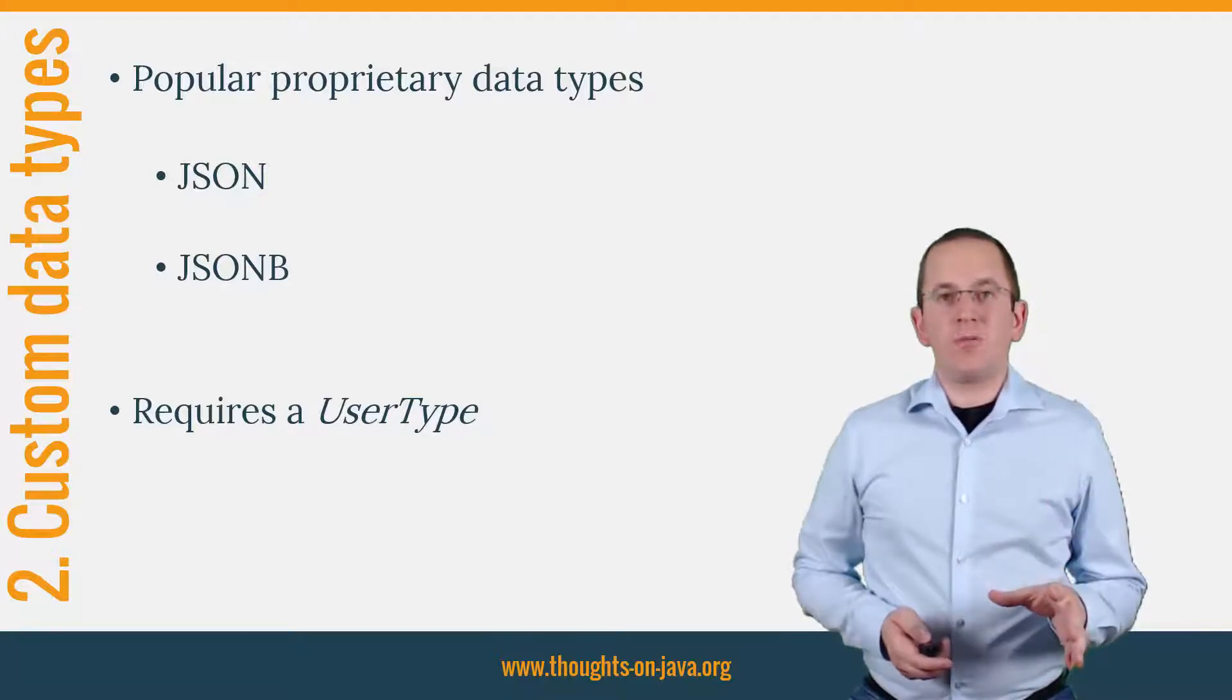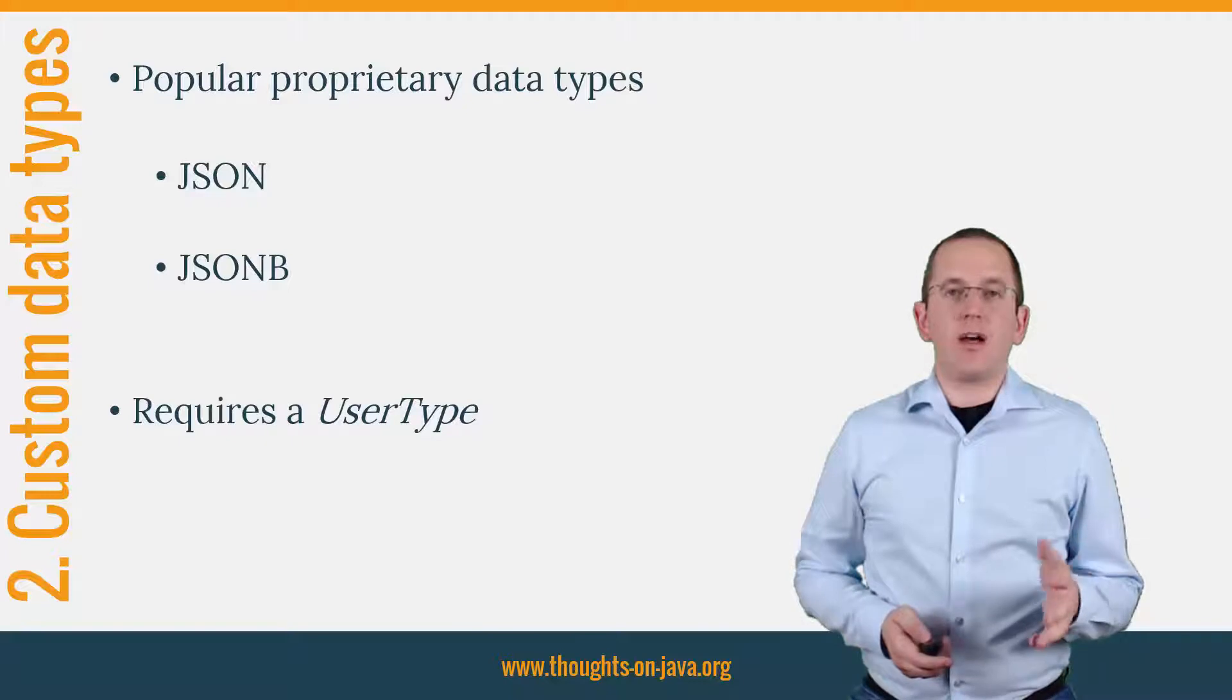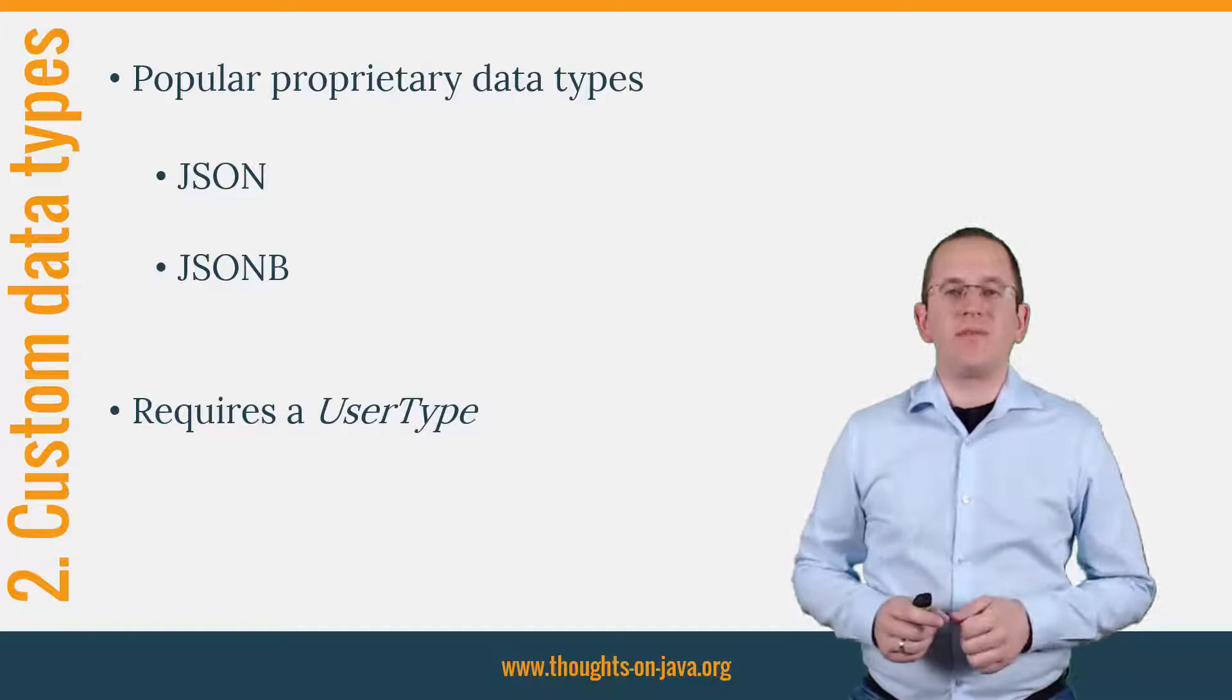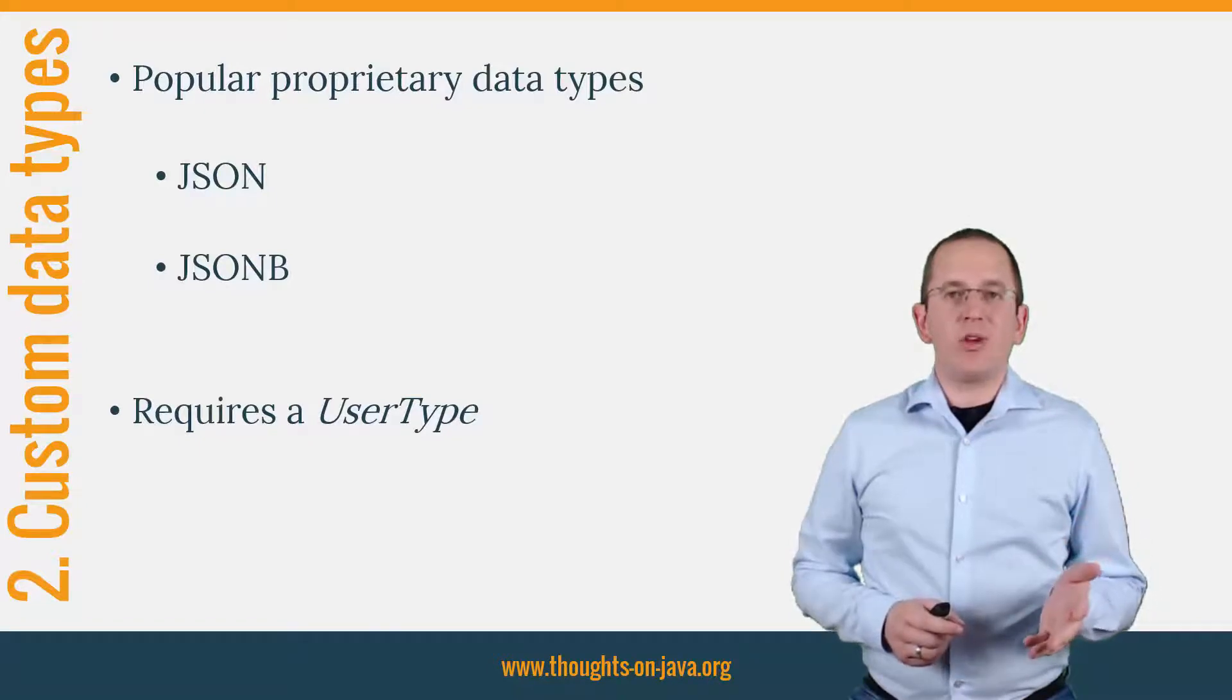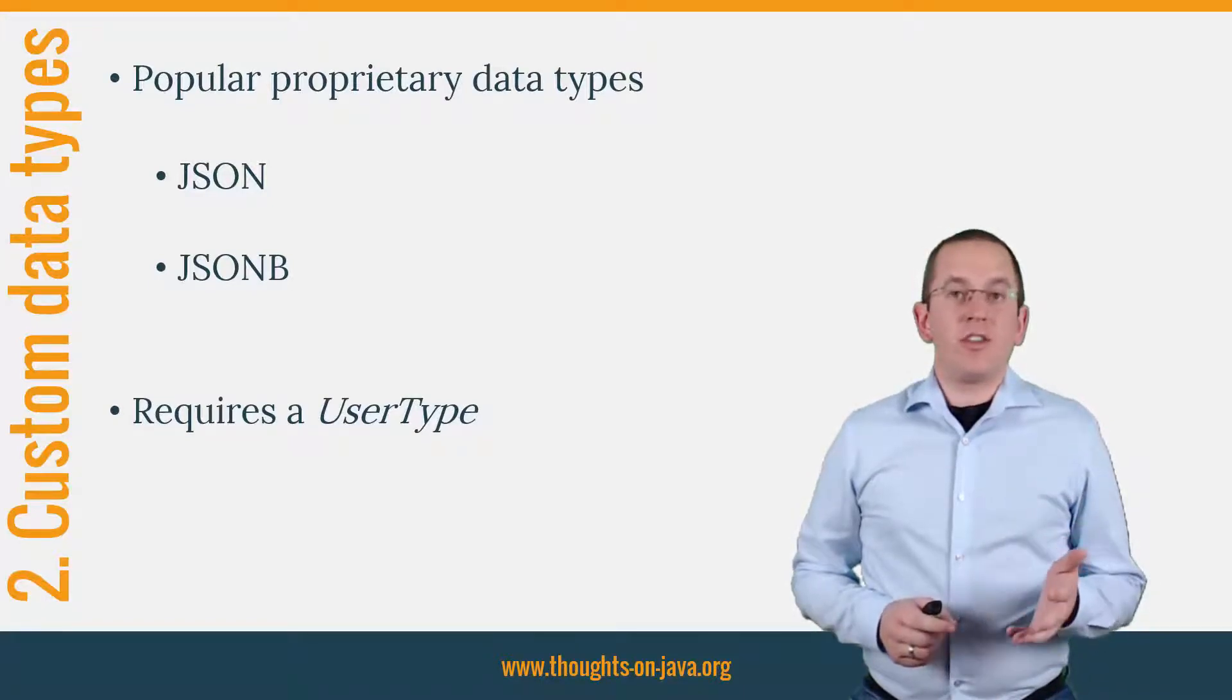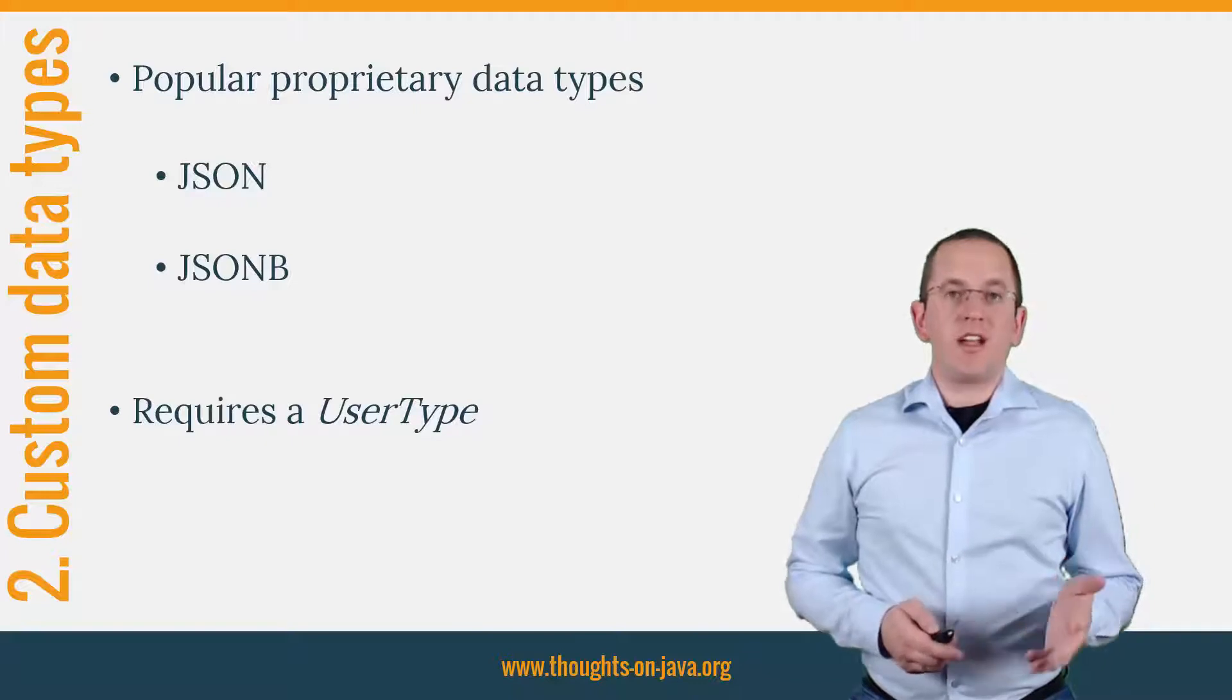You just need to implement and register a user type, which tells Hibernate how to map the Java object to a supported JDBC type, and vice versa. I explained the required implementation in great detail on my blog. You can find a link to it in the video description. You can use the same approach to implement a custom mapping for all PostgreSQL types that are not supported by Hibernate.